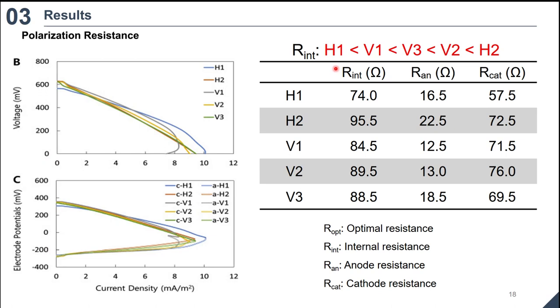R_N was calculated from a linear part of full cell polarization curves, and it showed that R_N in average was lowest in H1, 74.0 ohm, followed by V1, 84.5 ohm, V3, 88.5 ohm, V2, 89.5 ohm, and H2, 95.5 ohm. Internal resistances of the MFC were proportional to their power densities and current densities, but electrode polarization resistances were not.